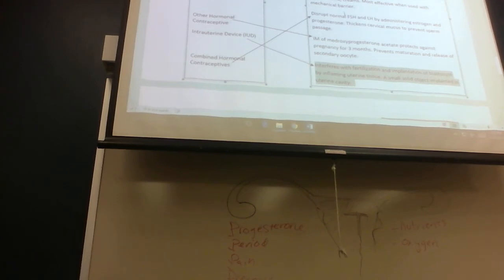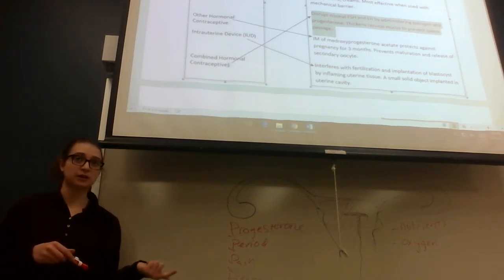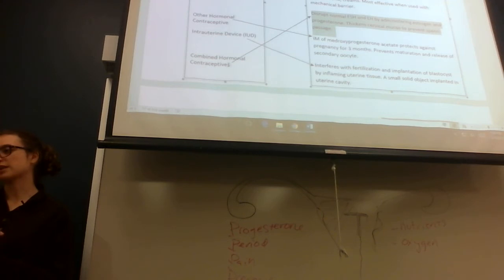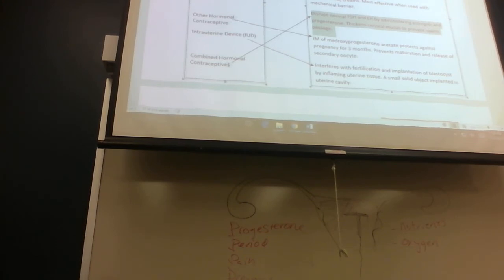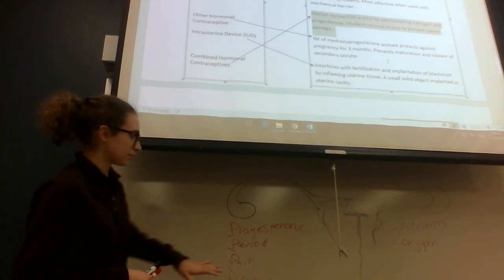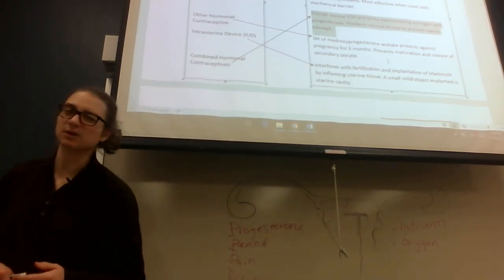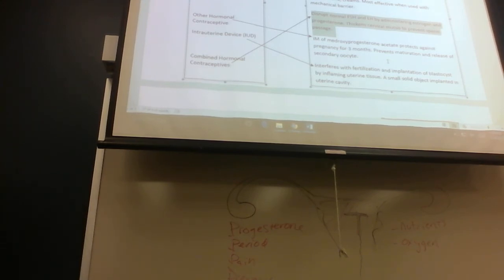Combined hormonal contraceptives. This is when females take hormones to offset their reproductive abilities. It disrupts normal follicle-stimulating hormone and luteinizing hormone by administering estrogen and progesterone. If you have a lot of progesterone, you're not going to produce luteinizing hormone. Estrogen also suppresses luteinizing hormone. You just take estrogen and progesterone. It also thickens cervical mucus to prevent sperm passage. If cervical mucus is thickened, then the sperm can't get past it.